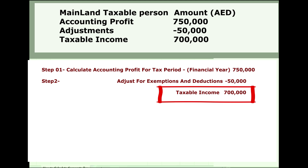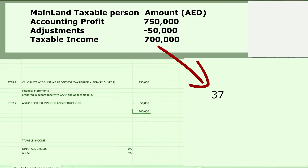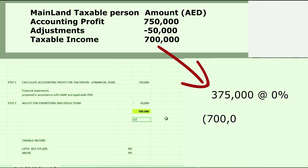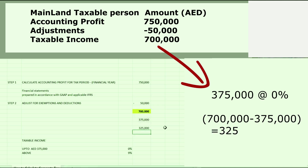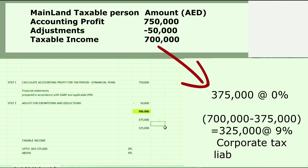So now we have a taxable income of 700,000. This 700,000 will be divided into two portions: 375,000 will be charged at zero percent, and the remaining 325,000 will be charged at nine percent.